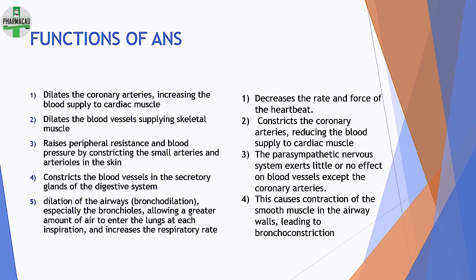Now let's compare functions of ANS system by system. First: cardiac. In sympathetic (fight/flight), the heart must work more, so the coronary arteries dilate, bringing more blood and oxygen to the cardiac muscle so it can pump better. Therefore, the heart rate and force of heartbeat increase. In parasympathetic, the heart rate and force of heartbeat reduce, and the coronary arteries constrict — but not to a dangerous level, just closer to normal.